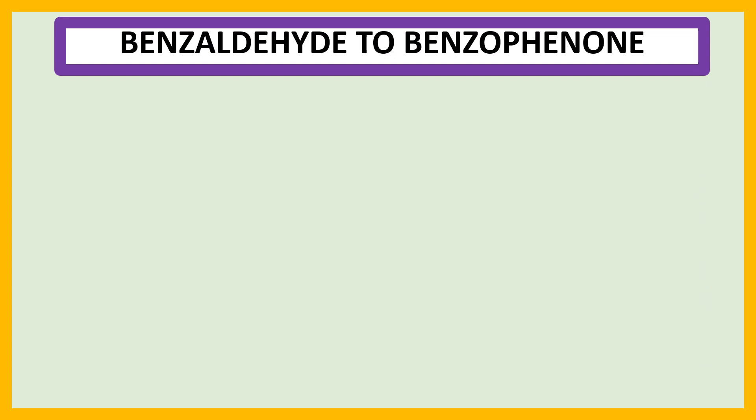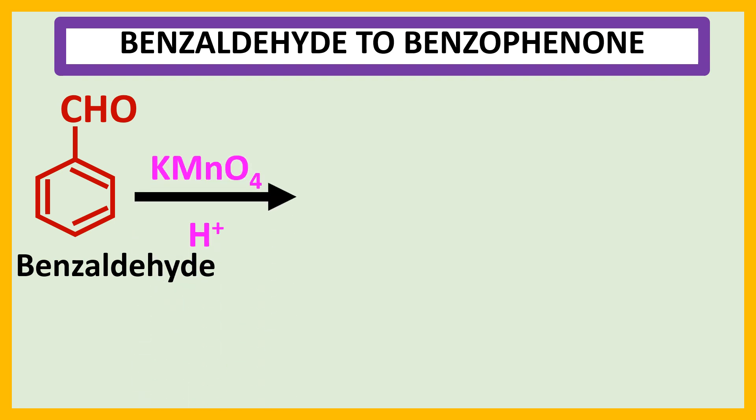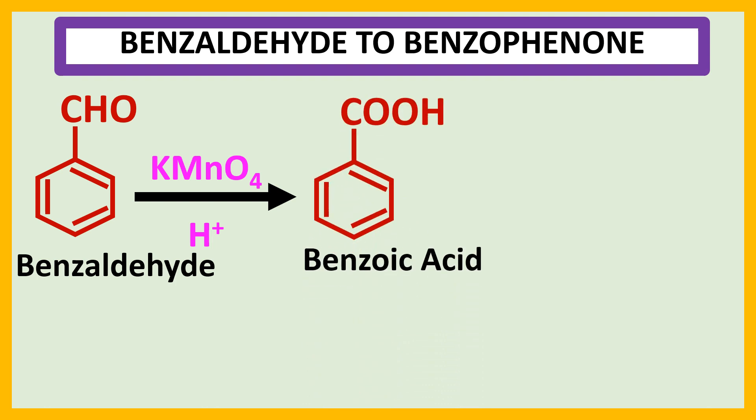Welcome everyone. Here we discuss the conversion of benzaldehyde to benzophenone. This reaction occurs in three steps. In the first step, benzaldehyde is treated with KMnO₄ in acidic medium, so benzoic acid is produced.